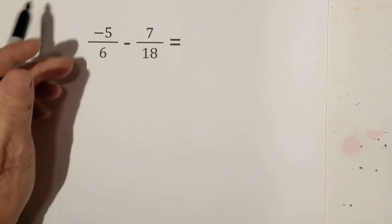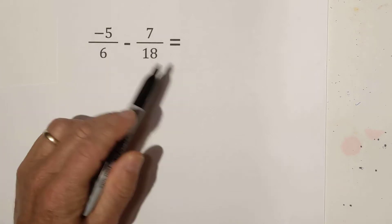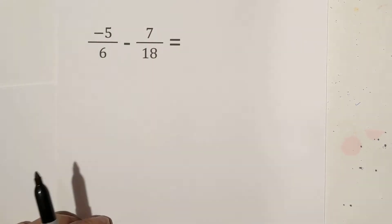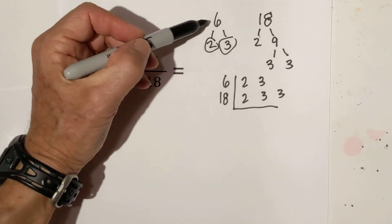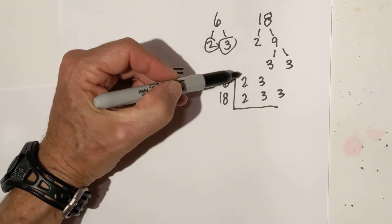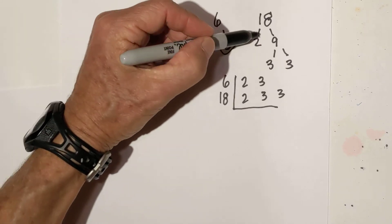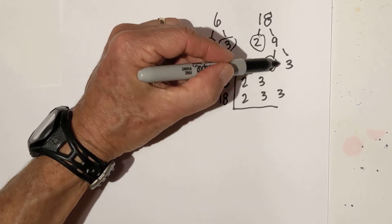In this example we have the negative number here. We need to find a common denominator. I am going to go to a factor tree. To speed things along a little bit the factors of 6 are 2 and 3. I place them in the chart and for 18 it is 2, 3 and 3.